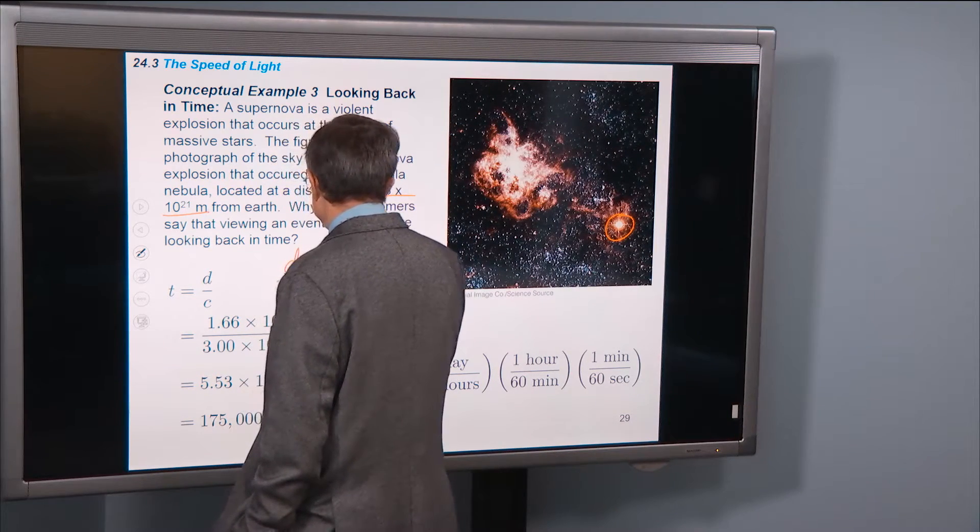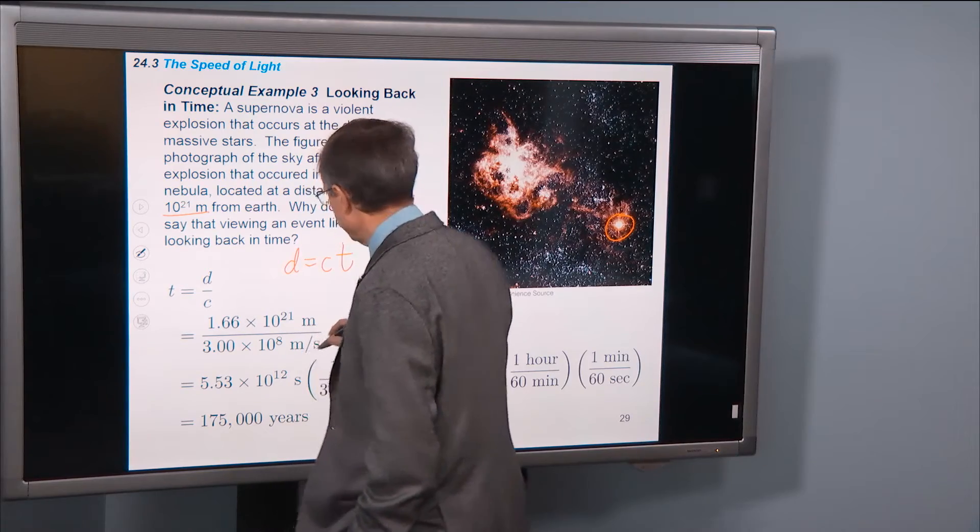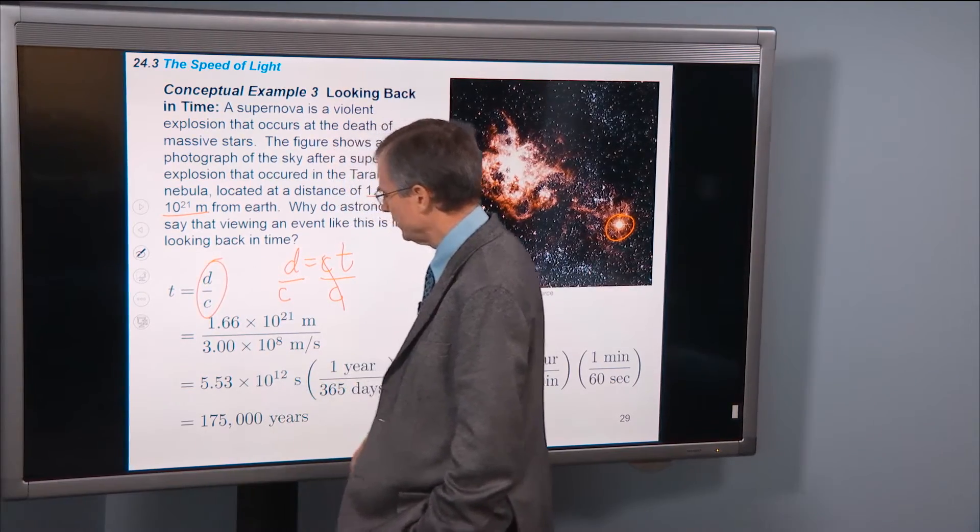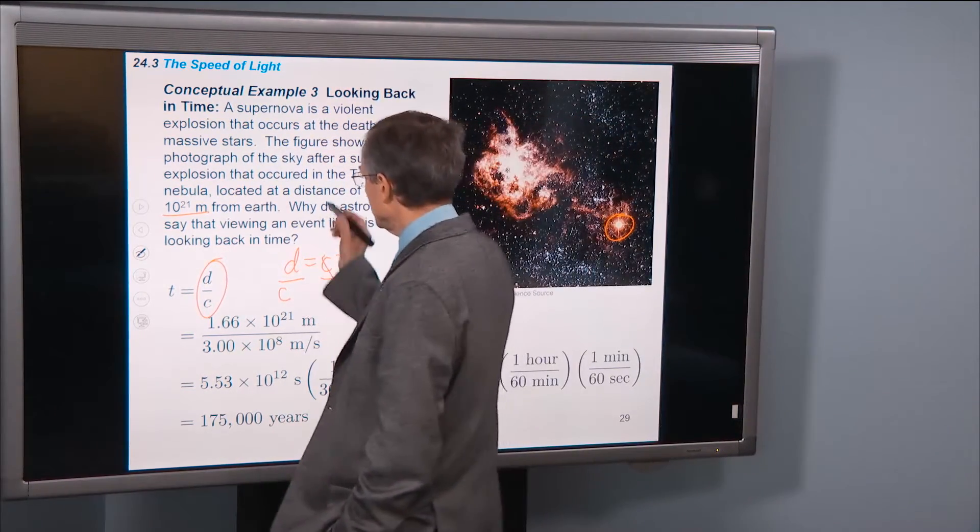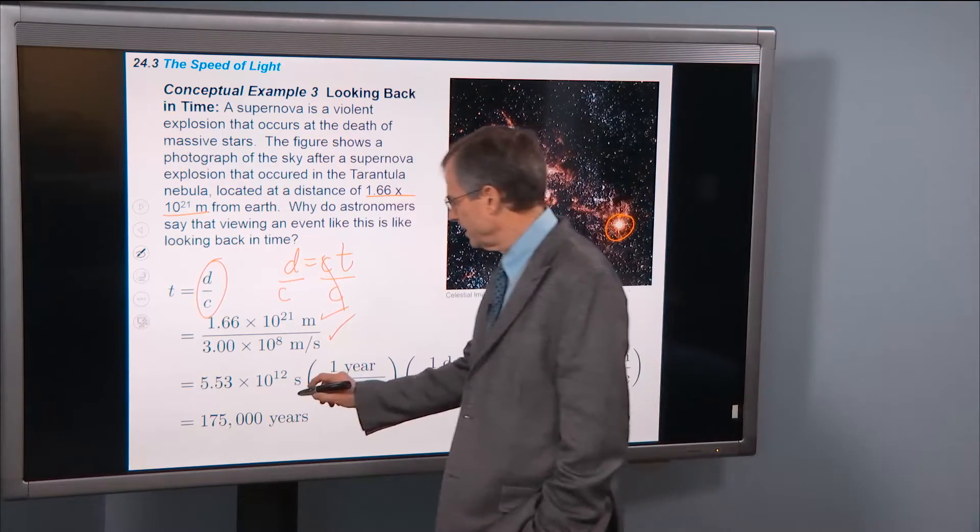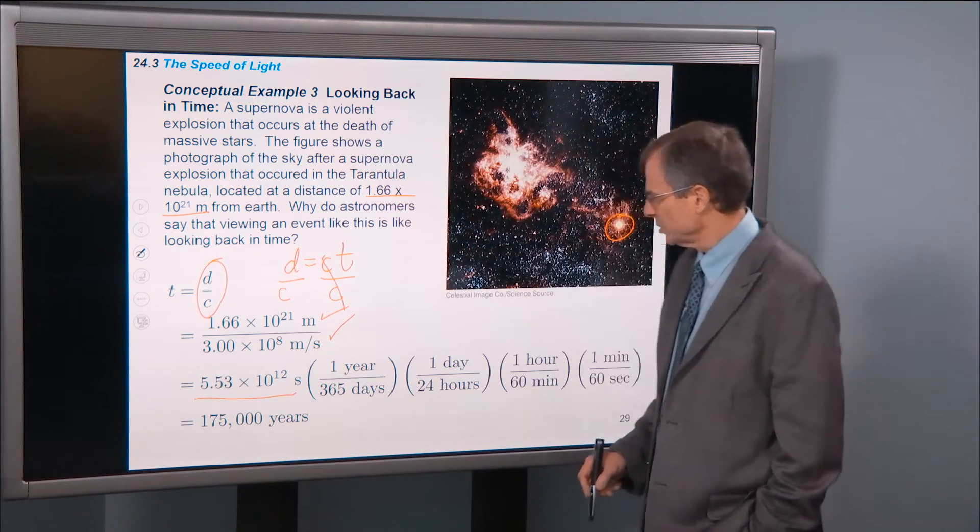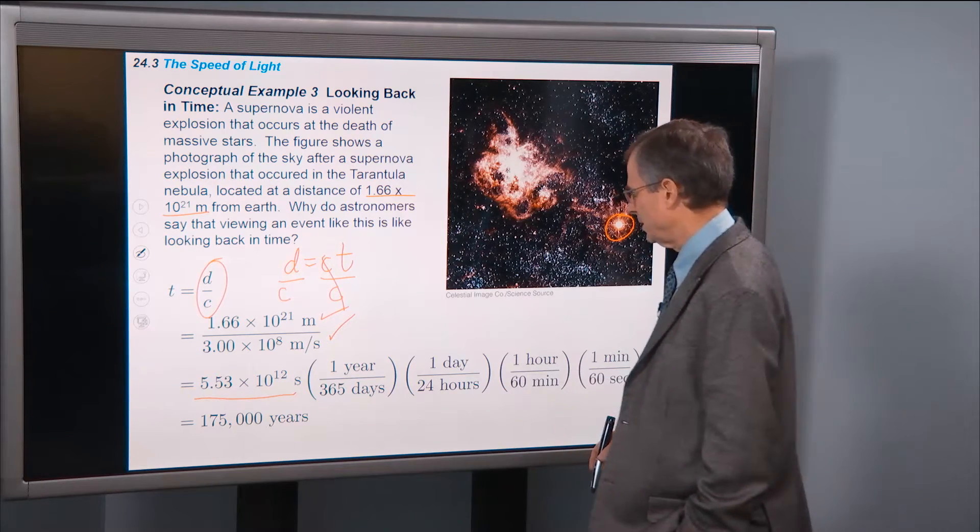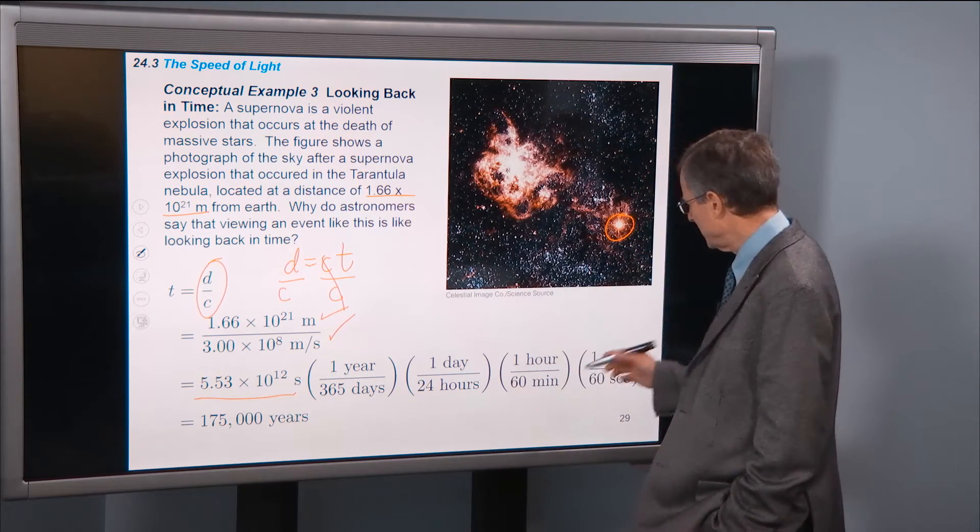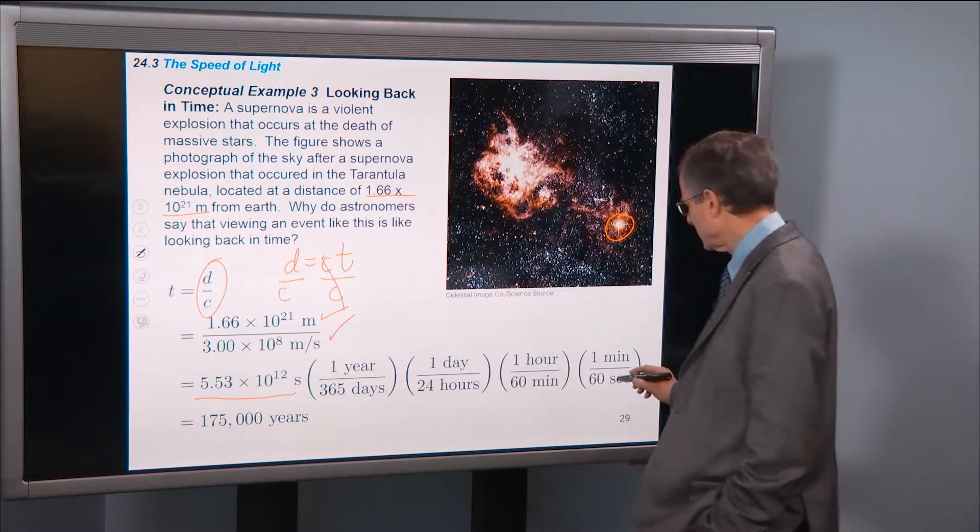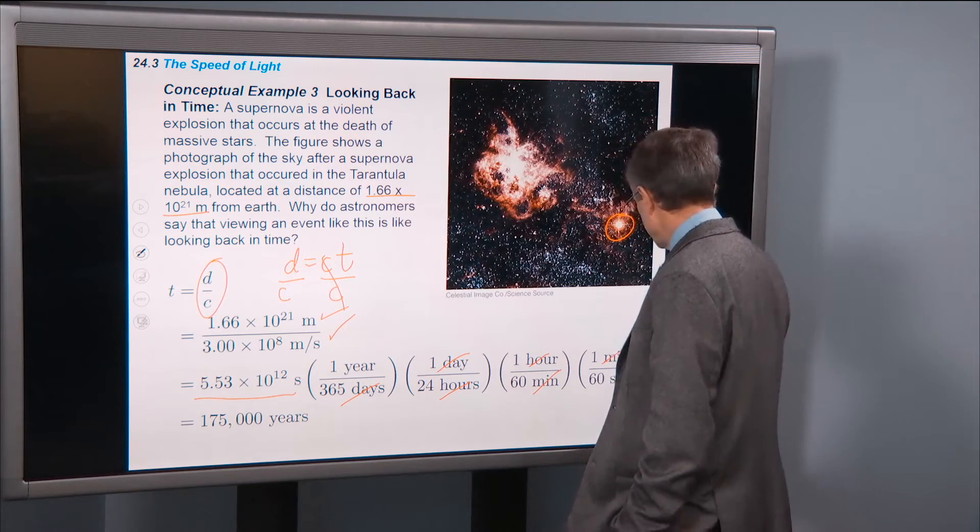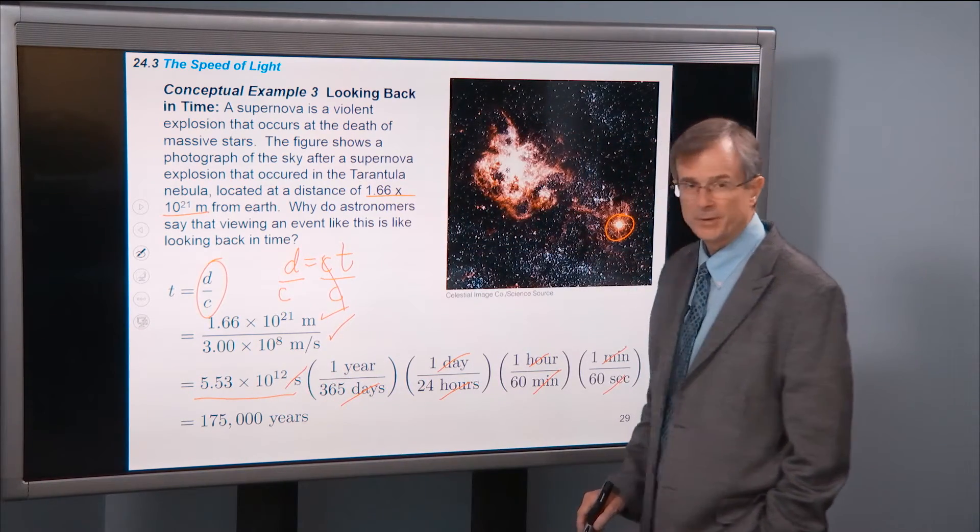Well, the distance is the speed times the time. We can solve that for the time by dividing through by c. So the time is just the distance divided by the speed of light. The distance we're given is this one, the speed of light we know. Plug in the numbers and you get this number of seconds. That's a lot of seconds. So let's convert that into two years. One year is 365 days. One day is 24 hours. One hour is 60 minutes. One minute is 60 seconds. You do all the cancellations.